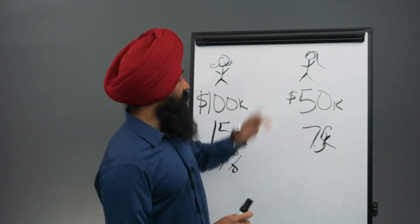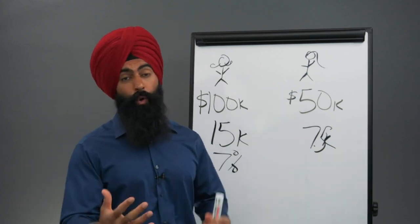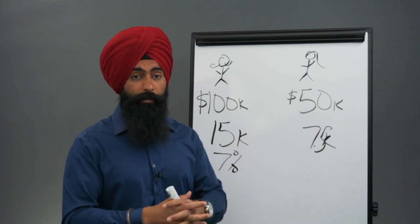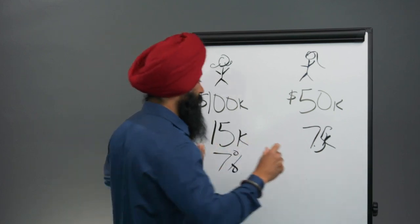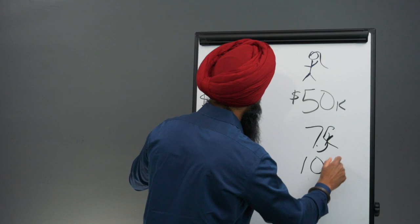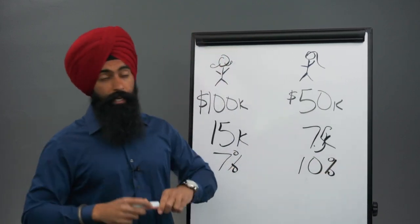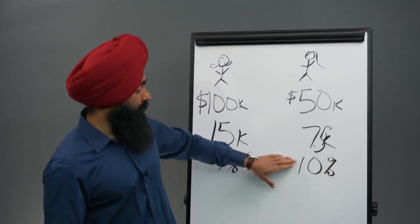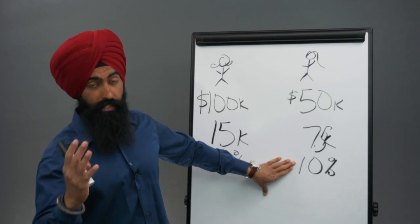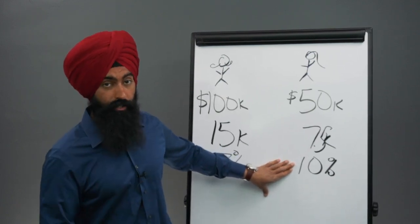But Paramjit decided to do something a little bit different. She decided to go out and learn about investing. She wanted to manage her money a little bit better and she was able to get a 10% annual return on her money, even though she's investing less money, but she was a little bit more involved on the financial education side of what to do with the money that she actually earned.